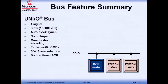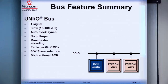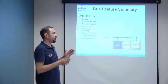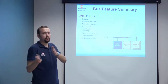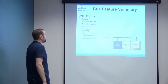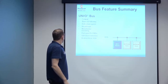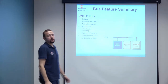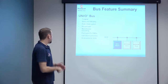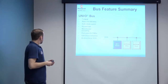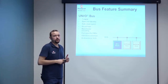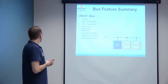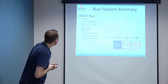To wrap up the UNIO bus: it uses a single line for both clock and data encoded via Manchester encoding. The bus period is determined and measurable by all slaves from the sync byte, and can be reconstructed from the master's input. It has a bidirectional acknowledge sequence (MAK and SAK), part-specific commands, runs at 10 kHz to 100 kHz, is fairly slow but reliable, and requires more complex software — though with only one active wire to route, it offers significant hardware simplicity.